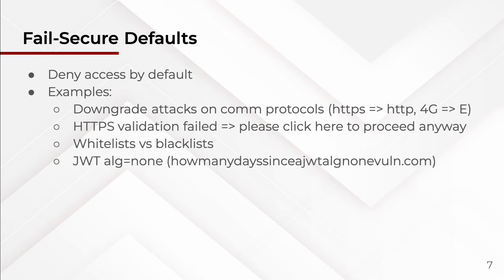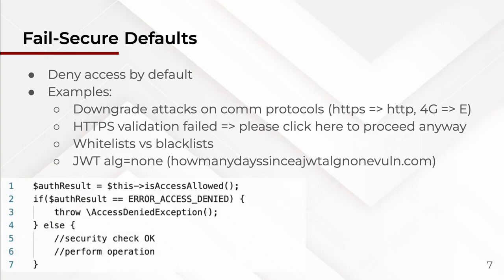alg:none means the signature has no algorithm — no encryption — so anybody can generate that signature. With a proper algorithm, only the server has the key to generate the signature. Because alg:none was in the specification, many libraries allowed it, and people could simply claim 'I'm the root user' with an alg:none signature and the server would accept it. You should not allow alg:none by design.